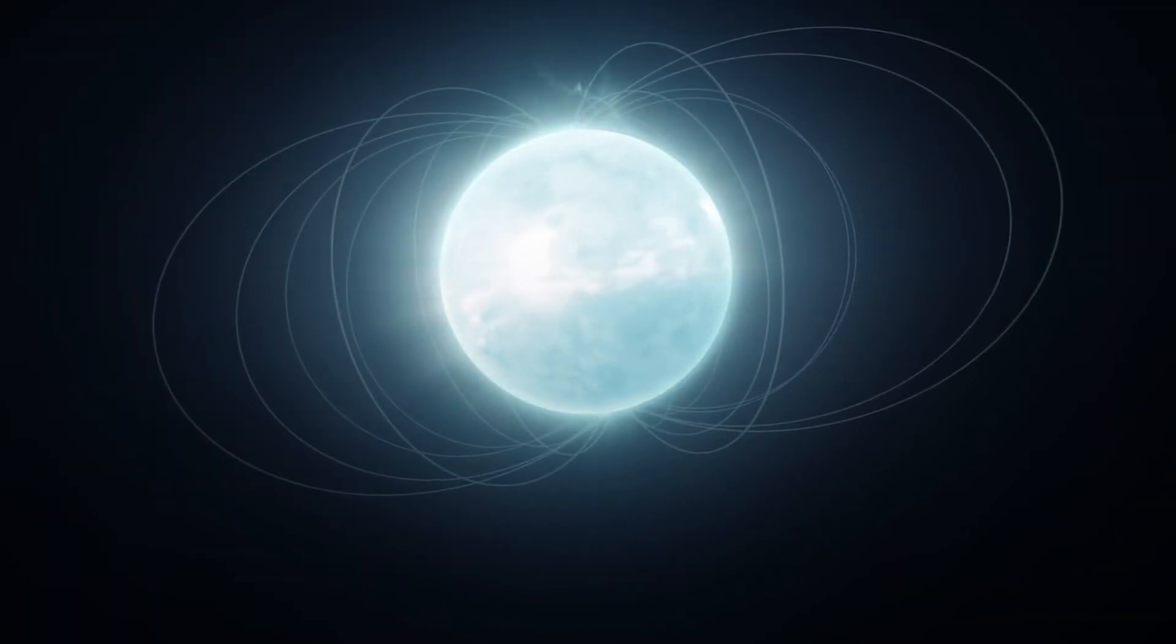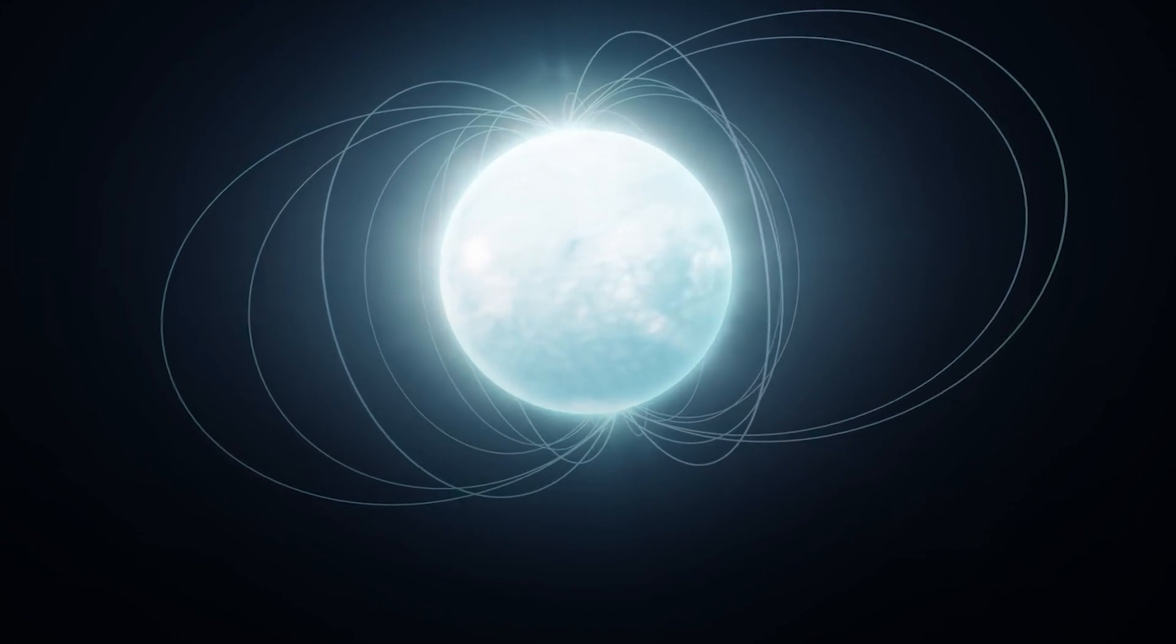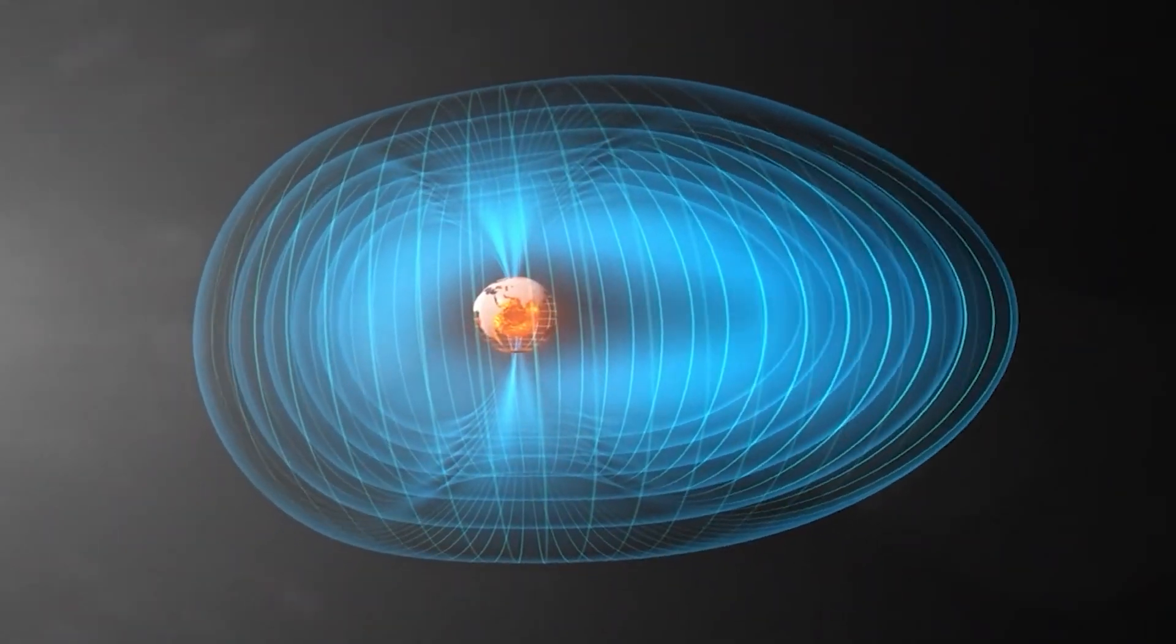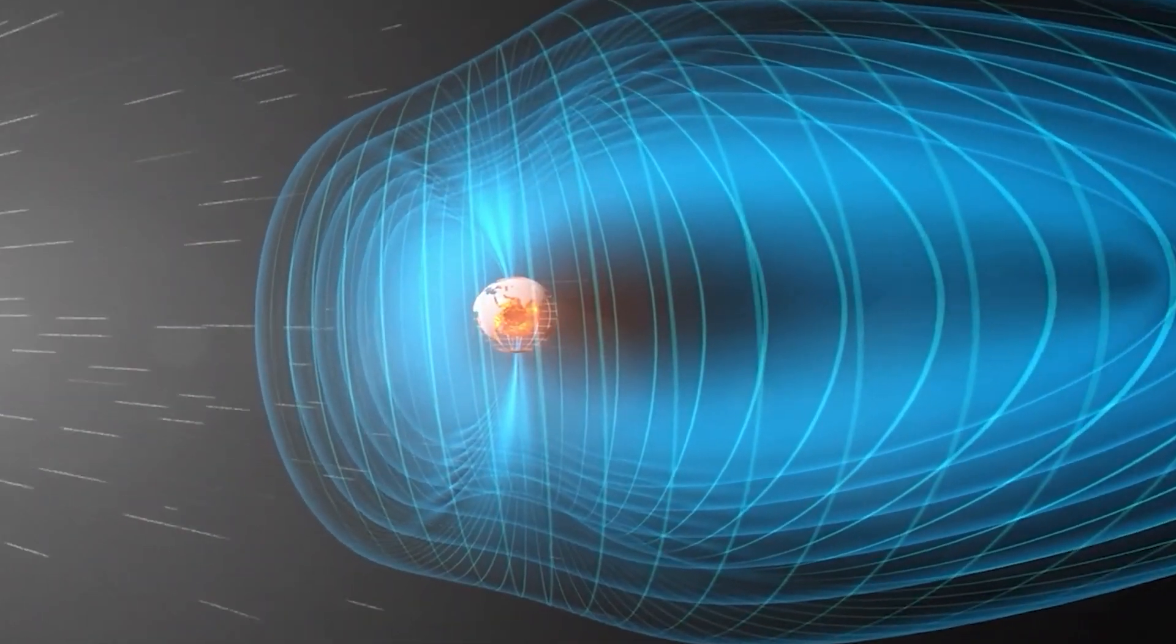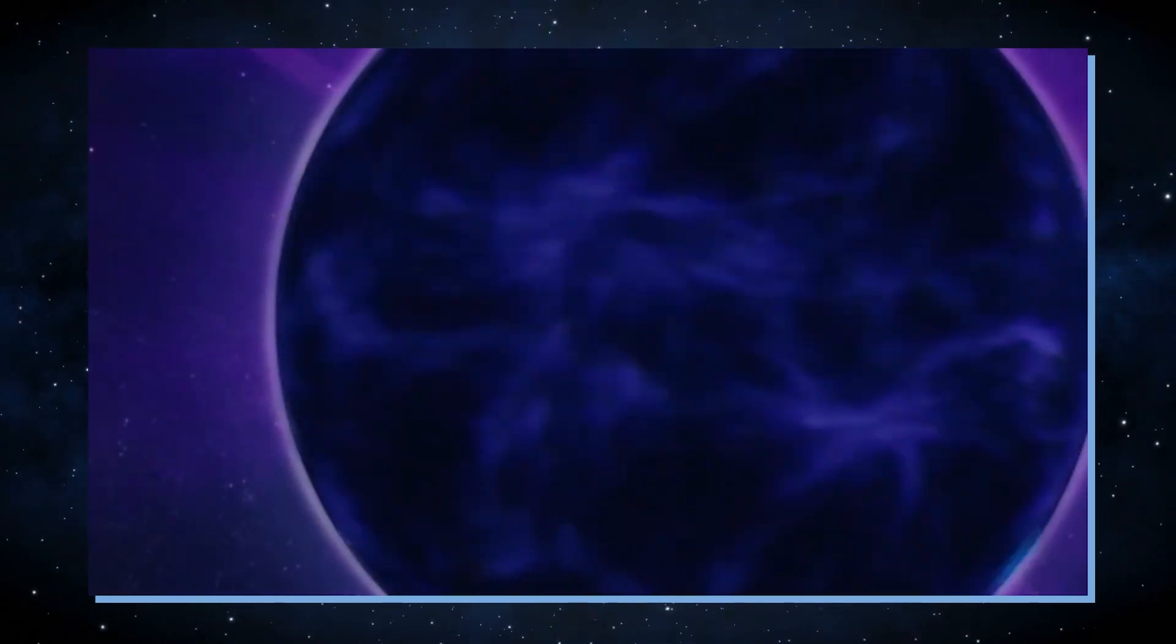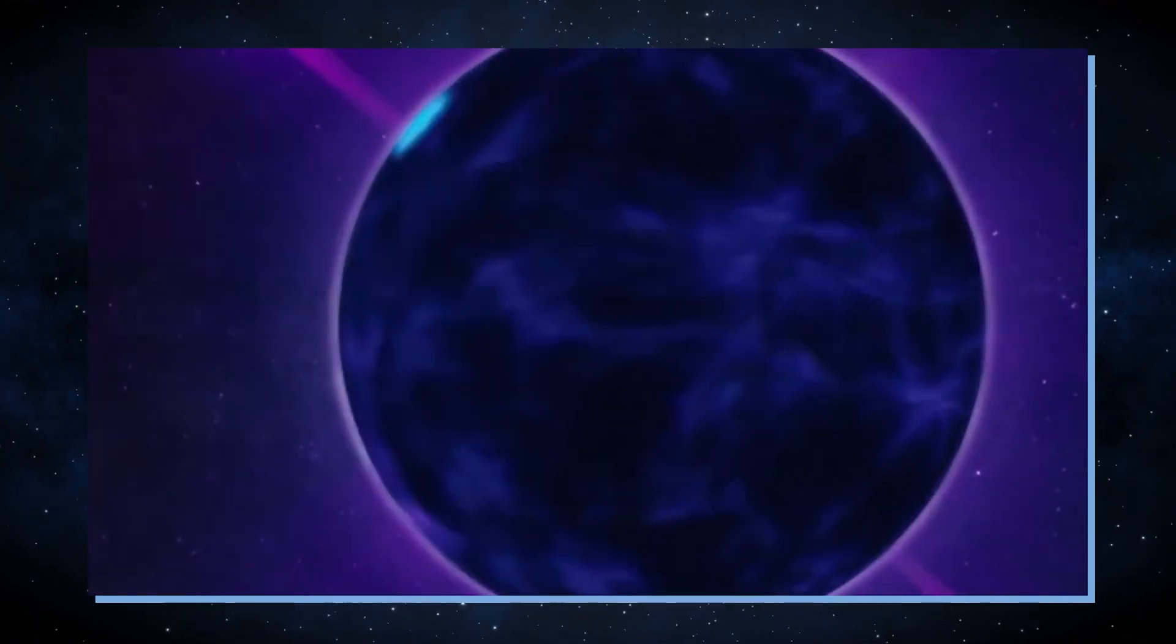The defining feature of a magnetar is its ultra-powerful magnetic field, estimated to be at least 1,000 times stronger than that of a typical neutron star, and approximately a trillion times stronger than Earth's magnetic field. If one were to come within a 600-mile range of a magnetar, the outcome would be almost certain death.